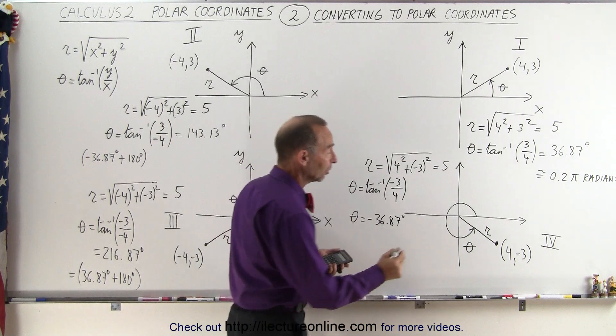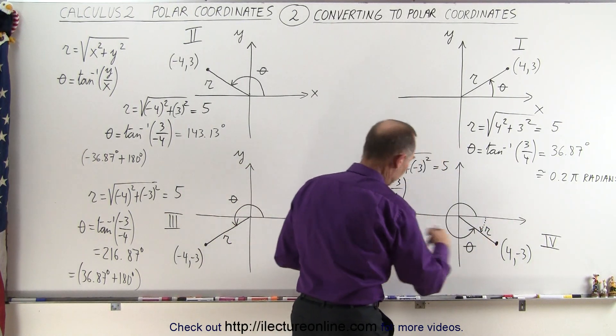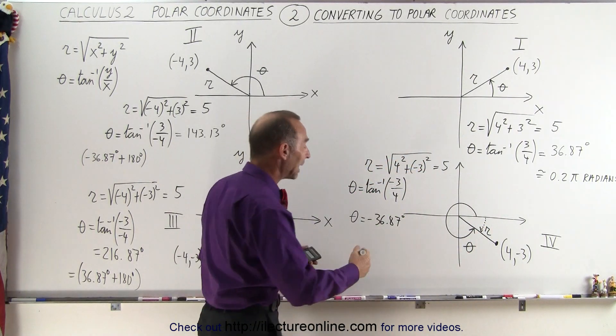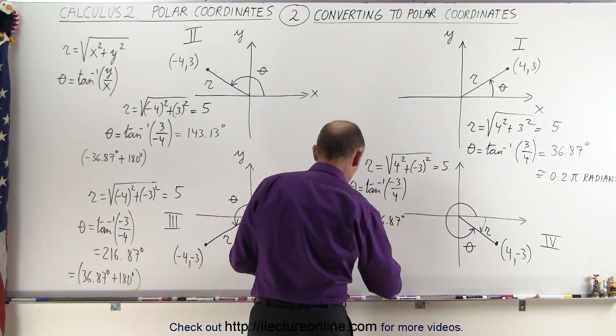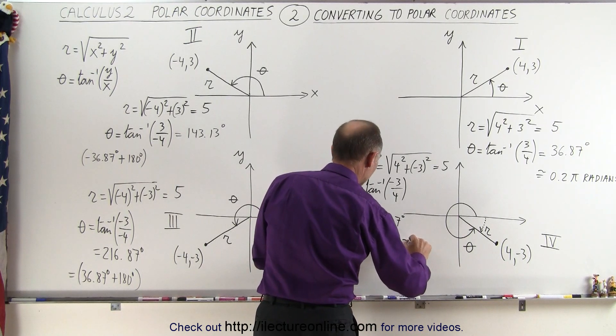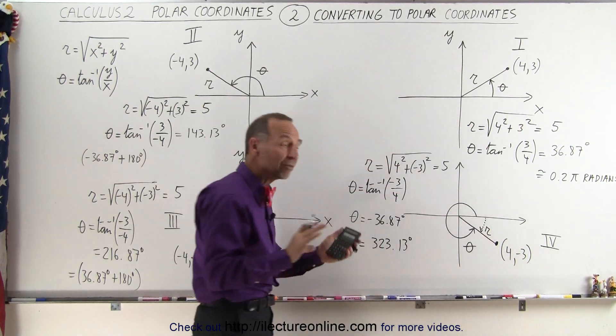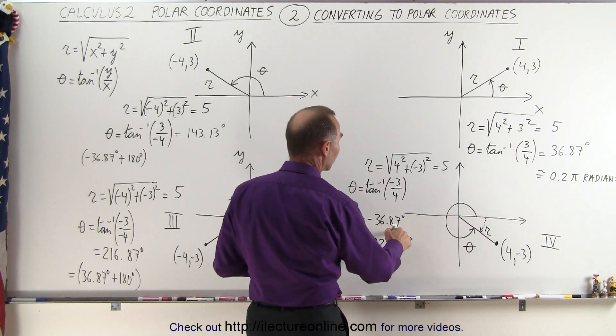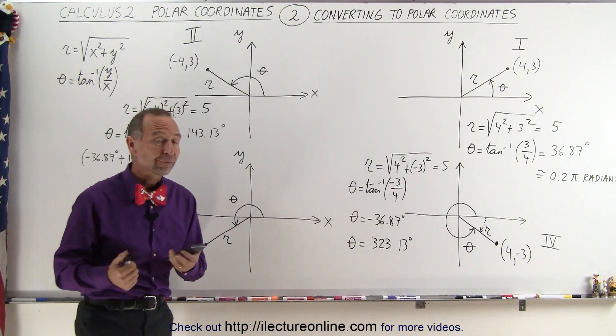So theta equals minus 36.87 degrees, which is indeed correct, because if we go in the opposite direction, a minus 36.87 degrees, we end up in the right location. However, we can also get the same thing by adding 360 to that. So plus 360, that gives us theta is equal to a positive 323.13 degrees. And that will give us the right answer in a positive direction. So it depends how you want to look at it. You can say this is equal to a minus 36.87 or a positive 323.13.